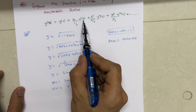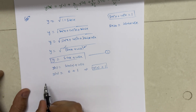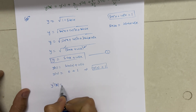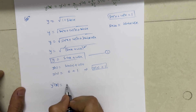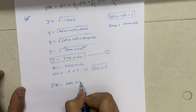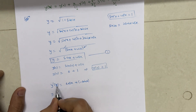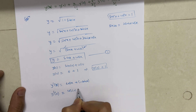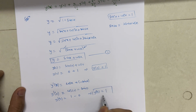Next we need y'(0). Differentiating y = sin x + cos x with respect to x gives y'(x) = cos x − sin x. Substituting x = 0: y'(0) = cos 0 − sin 0 = 1 − 0 = 1. So y'(0) = 1.